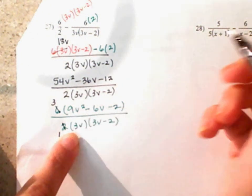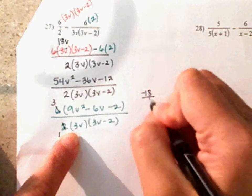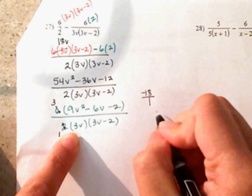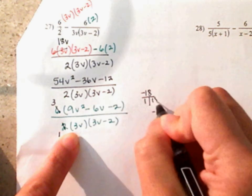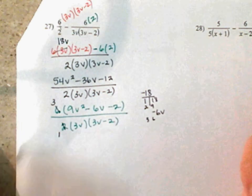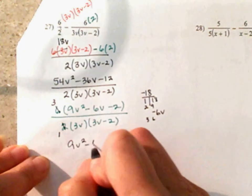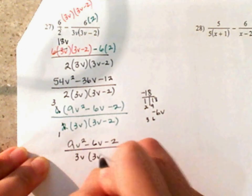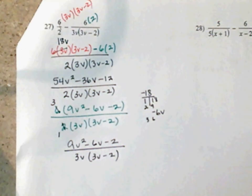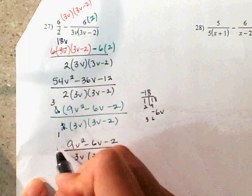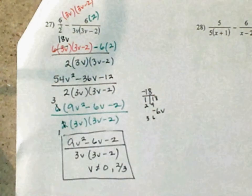9 times negative 2 is negative 18. See, we can try to factor — two numbers that multiply to give you negative 18 and subtract to give you 6V: 1 and 18, 2 and 9, 3 and 6. I don't see anything, so this would be your final answer: 9V squared minus 6V minus 2, all divided by 3V times 3V minus 2. Nothing to cancel out. And what can V not be? 0 and 2 over 3. There's number 27.